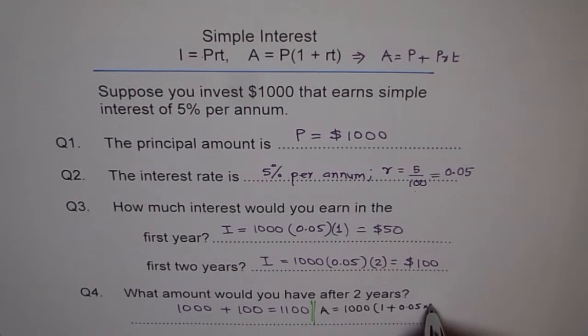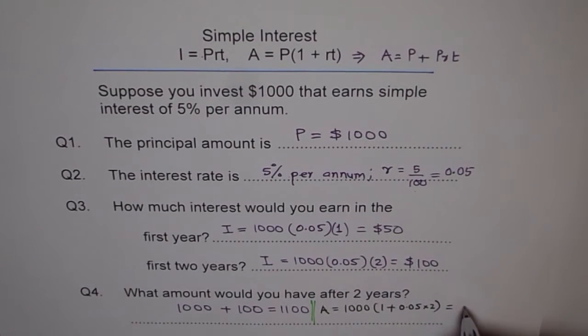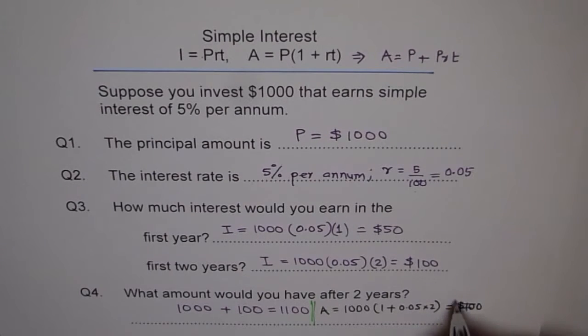And then calculate using calculator. So this is 10, this is 1.1. 1.1. 1.1 times 1000 is 1100. Let me write 1000 first. 1100. $1100. So that's how we can calculate the total amount after two years.